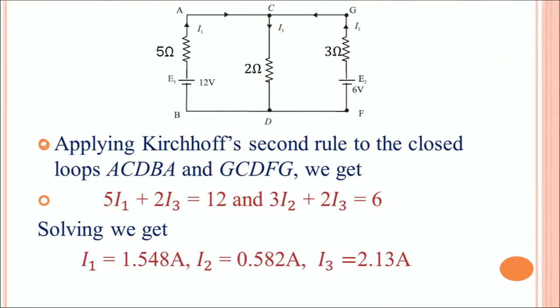Now let us apply Kirchhoff's second rule to the closed loops. For the first loop A, C, D, B, A: current I1 is in the same direction as the loop, so its potential drop is positive. The battery is traversed from negative to positive, so it is also positive. The equation for this loop is: 5·I1 plus 2·I3 equals 12.